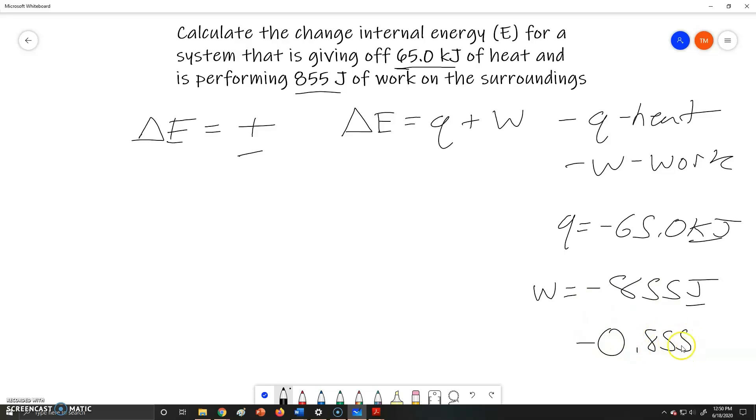Okay, so now we can plug these two values into our equation. So our delta E is equal to negative 65.0 kilojoules plus our negative 0.855 kilojoules, and when we add these two together we get negative 65.855 kilojoules.